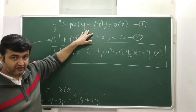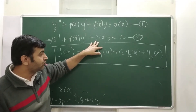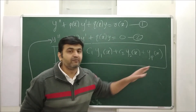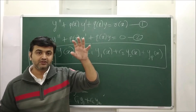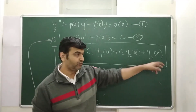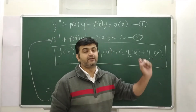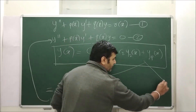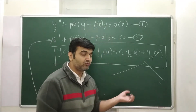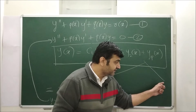Whenever you have a non-homogeneous differential equation, step one is to write down the corresponding homogeneous equation and find y1 and y2 using earlier techniques. Then find yp. The general solution ultimately boils down to finding yp, since we already know how to find the homogeneous part. To find yp there are two methods: method of undetermined coefficients and method of variation of parameters.